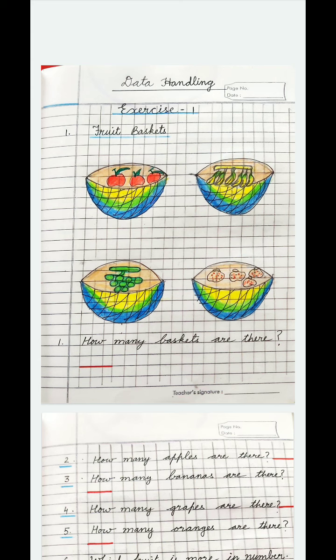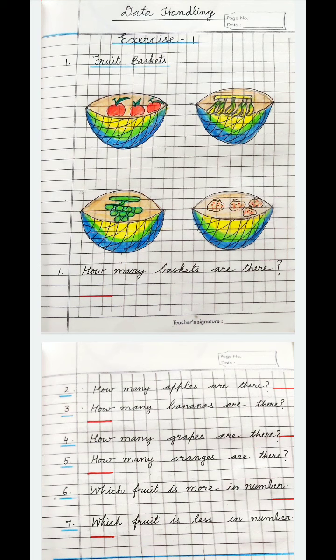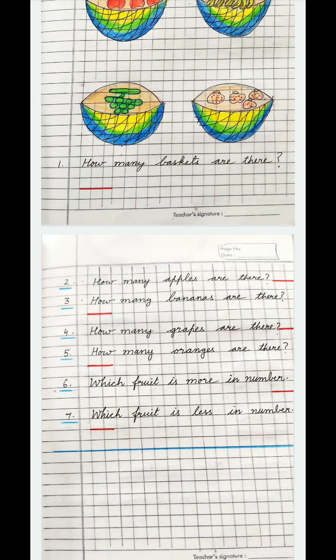So let's see: How many baskets are there? There are four baskets. How many apples are there? There are three apples. How many bananas are there? There are six bananas. How many grapes are there? There are nine grapes. How many oranges are there? There are four oranges. Which fruit is more in number? The maximum is grapes. Which fruit is less in number? Apple. So we are done with this exercise — it is a simple exercise and we will be continuing with many more exercises of this type.